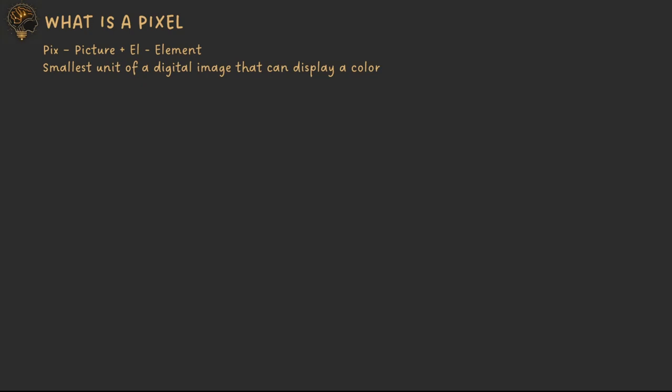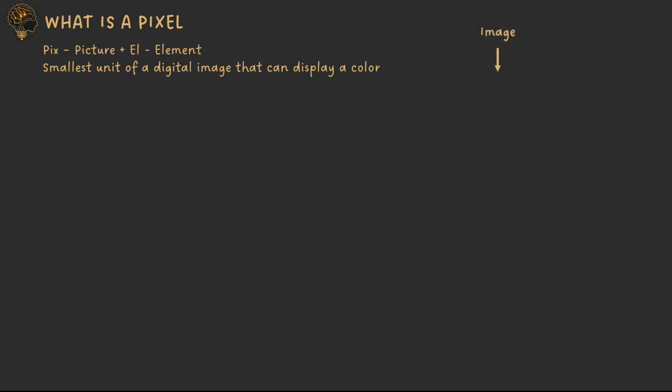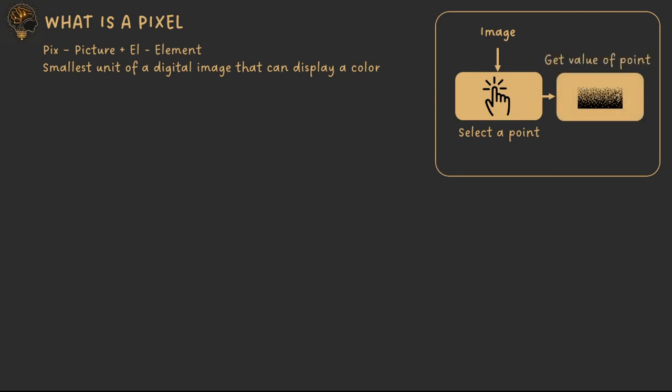A pixel literally stands for 'picture element.' It's the smallest unit of a digital image that can display a color or an intensity value. If we zoom into an image, we get the value of a point — that's what we mean by a pixel. The pixel has a location (its x and y coordinates) called pixel location, and the intensity value at that location is called pixel intensity. If you've had an old television or zoomed into an image, you can see the image is made up of a very large grid, and the smallest building block of that grid is a pixel.